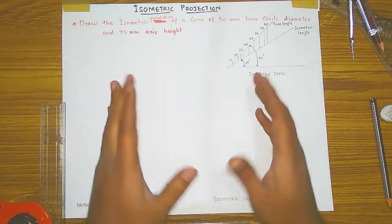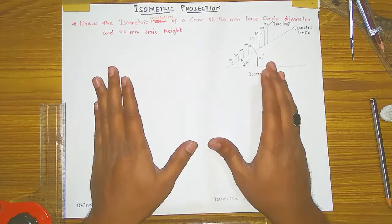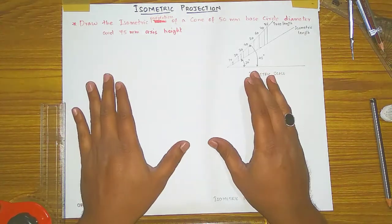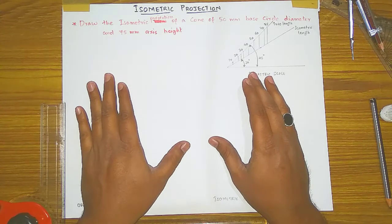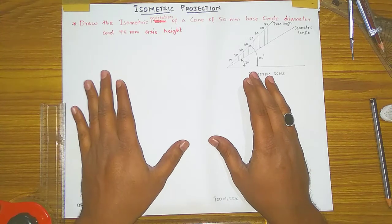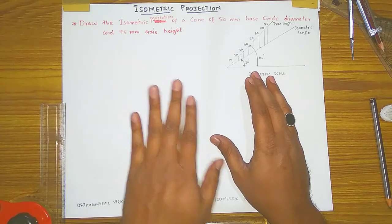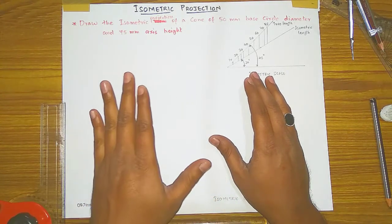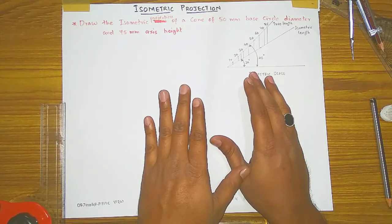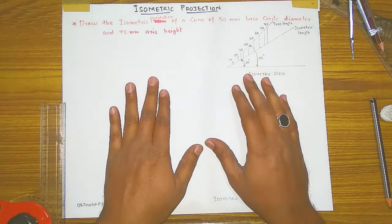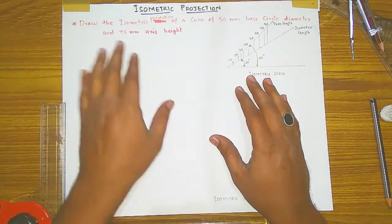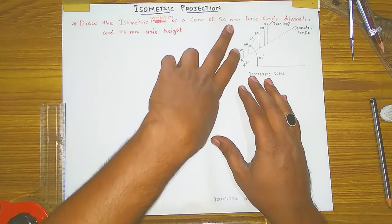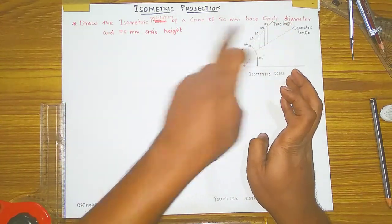Watch my videos till the end and also practice by yourself, then only you will come to understand how to draw this problem. Please share my videos, like, and subscribe my channel and press the bell icon to get more notifications. Starting my question: draw the isometric projection of a cone of 50 mm base circle diameter.